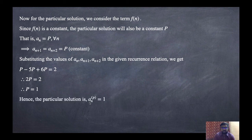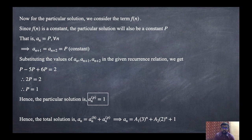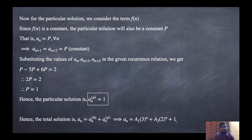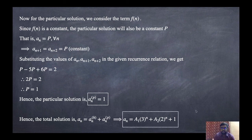So the particular solution ANP equals 1. The total solution is ANH plus ANP, which is A1·3^N plus A2·2^N plus 1. This is the final answer.